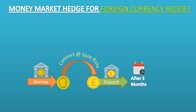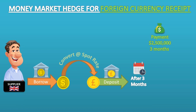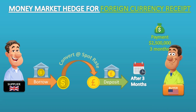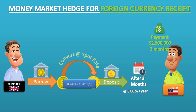Let's see an example of a money market hedge for foreign currency receipts. A UK seller is owed $2,500,000 receivable in three months' time from an American buyer. The spot exchange rate is 1.4498 to 1.4510 dollars per pound. The company can deposit in pounds for three months at 8.00% per annum and can borrow dollars for three months at 7.00% per annum. We want to find the receipt in pounds with a money market hedge and what effective forward rate this would represent.